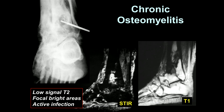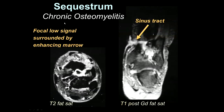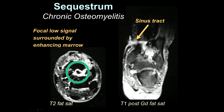Chronic osteomyelitis is also difficult to diagnose. Sclerosis occurs, but on fluid-sensitive sequences like STIR or post-contrast images, if you see areas of edema or enhancement, those may indicate a more active site of infection — those are the areas to target if you're going to do biopsy. In this example, we see a patient with chronic osteomyelitis after trauma, with a non-enhancing focus in the center representing a sequestrum, and a sinus tract extending out to the skin.